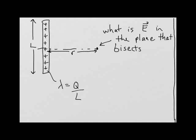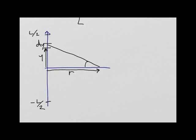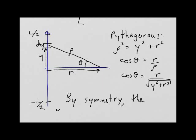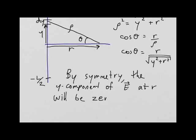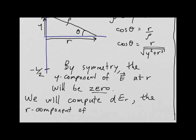We look at a plane that bisects the rod. Drawing a y-axis along the rod, we consider a little element dy at distance r. We integrate y from negative L/2 to positive L/2. The distance rho satisfies rho squared equals y squared plus r squared by Pythagoras, and cos theta equals r over the square root of y squared plus r squared. By symmetry, the y-component of the electric field at r is zero, since there is equal charge above and below y equals zero.